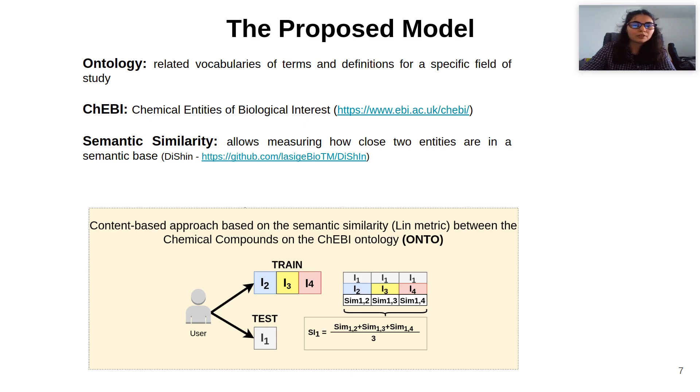And second, the algorithm calculates the mean of the similarities as the score assigned to item 1. For this work, we used the Lin similarity measure because it has a range from 0 to 1, and it is easy to organize from the most similar to the least similar.